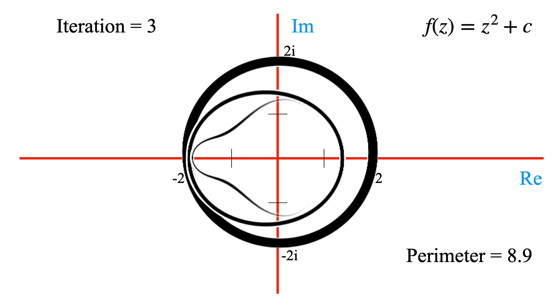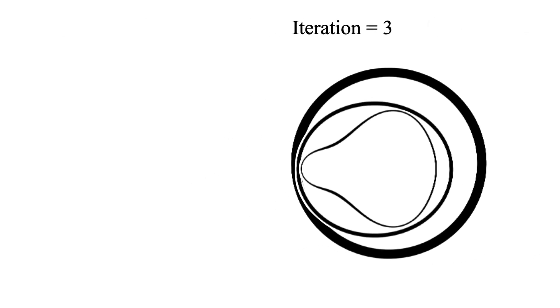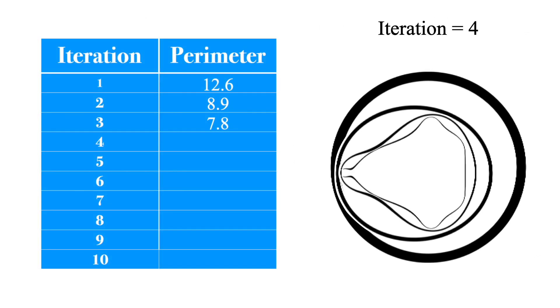Taking two more steps, the perimeter seems to be getting smaller, and we might hope that it will converge to some number. But this is deceiving.